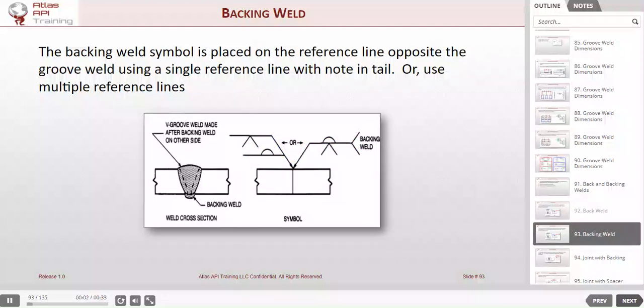And here we have a backing weld. The backing weld is applied first, as opposed to a back weld which is applied after the V weld. If you'll notice with the double reference lines, the welding symbol to the left has the backing weld being done first because the reference line is closest to the arrow, and then the V groove weld being done last because it's on the reference line furthest from the arrow.